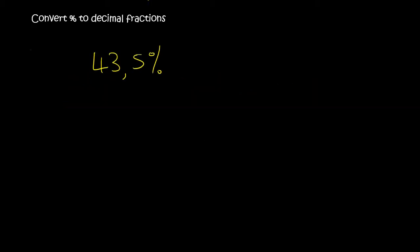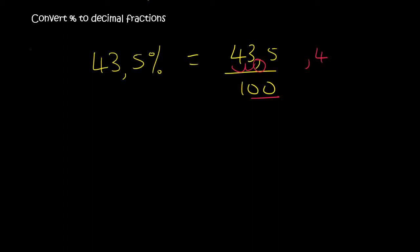Let's say you get 43.5%. Step one: just get rid of that percentage sign by dividing by 100. Now you've got two zeros, so you move the decimal two places, and so you end up with comma 435. Then the number in the front — well, because there's nothing there, you would add a zero.